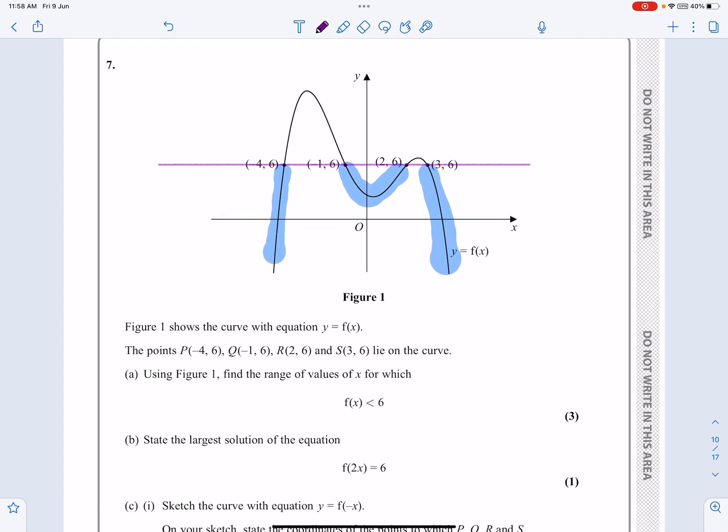Part B says, state the largest solution of the equation f(2x) equals 6. Right, so what does f(2x) do? f(2x) is a stretch parallel to the x-axis, and even though I'm calling it a stretch, it's a stretch scale factor a half, which in effect means that this graph is all going to be squeezed in.